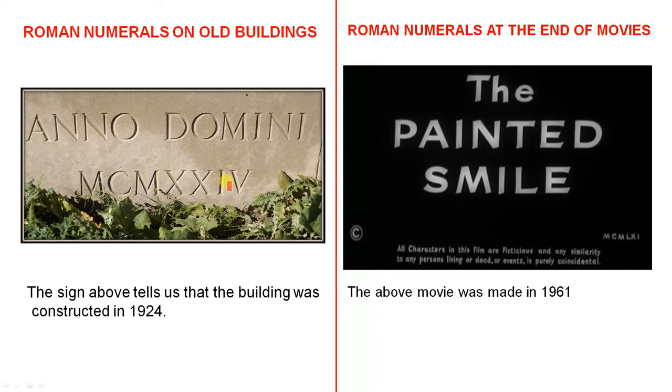X, X, I, V: 10, 20 and that represents 4. So this tells us that the sign above tells us that the building was constructed in 1924.